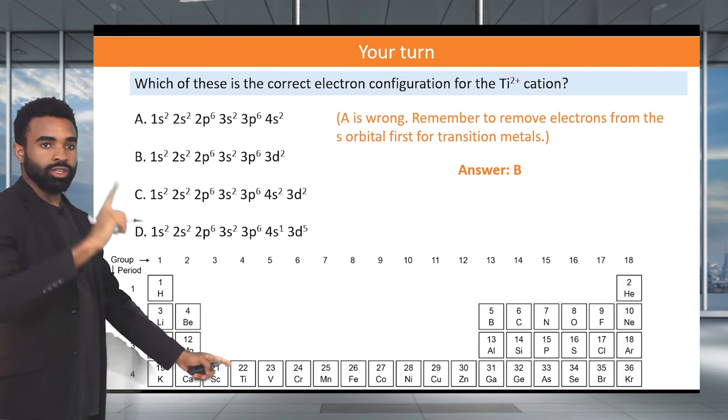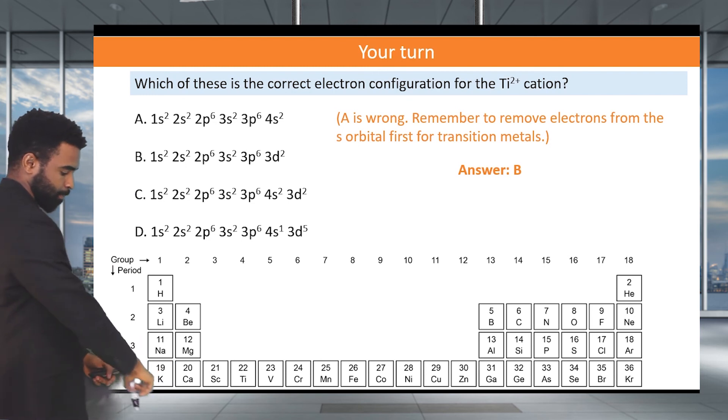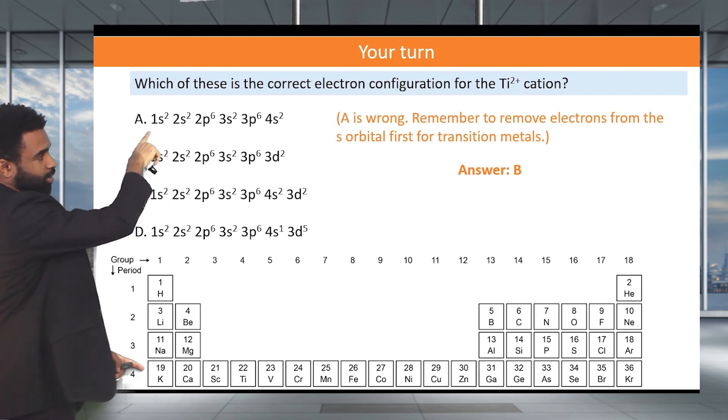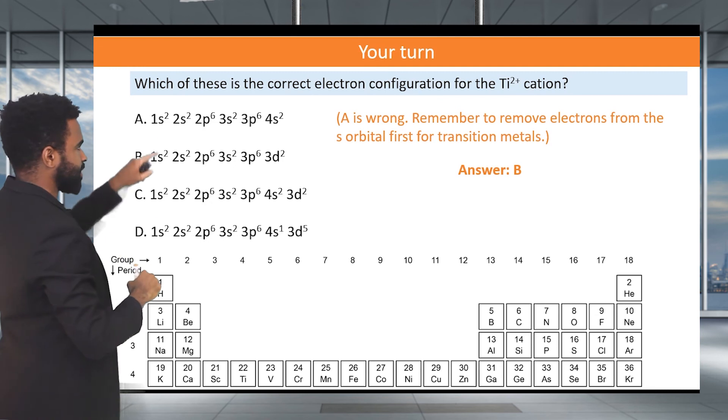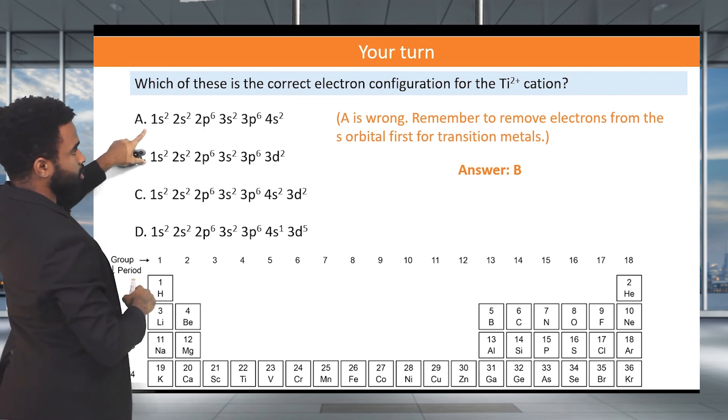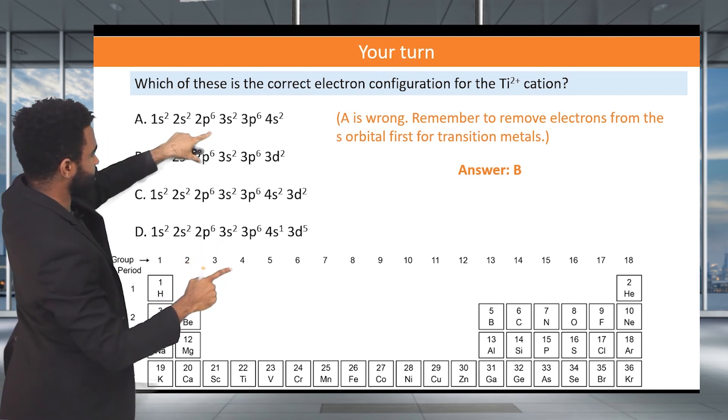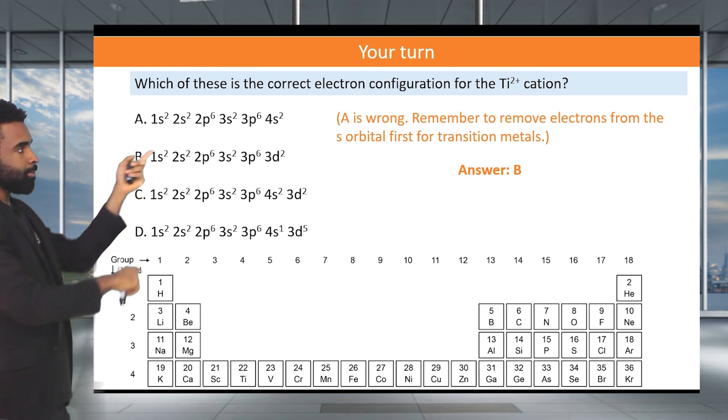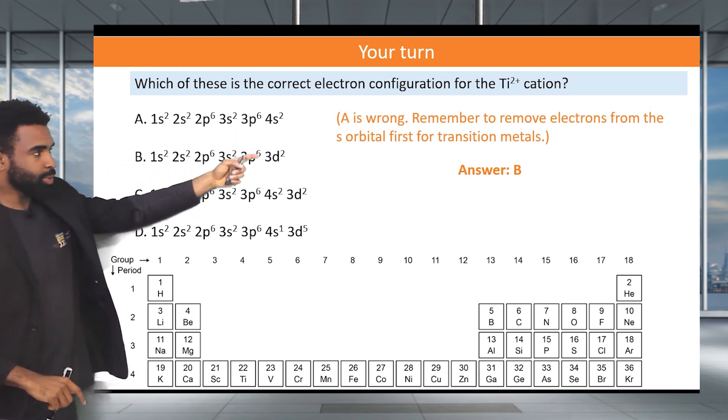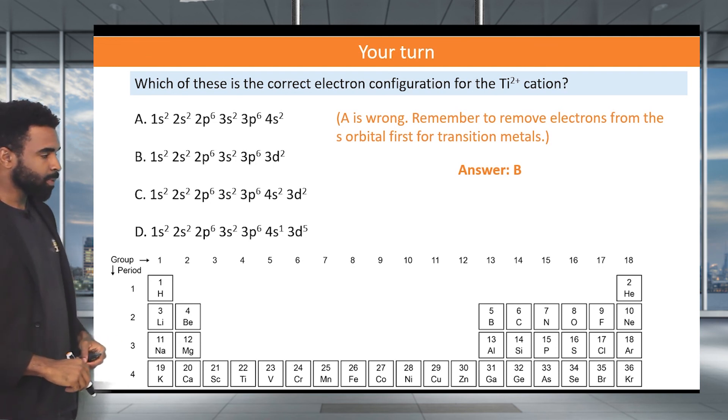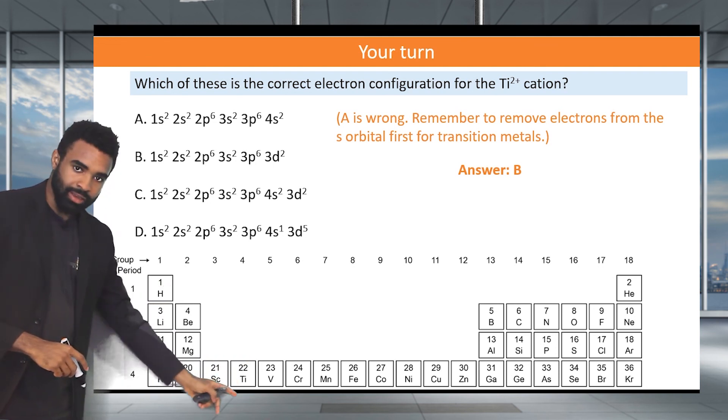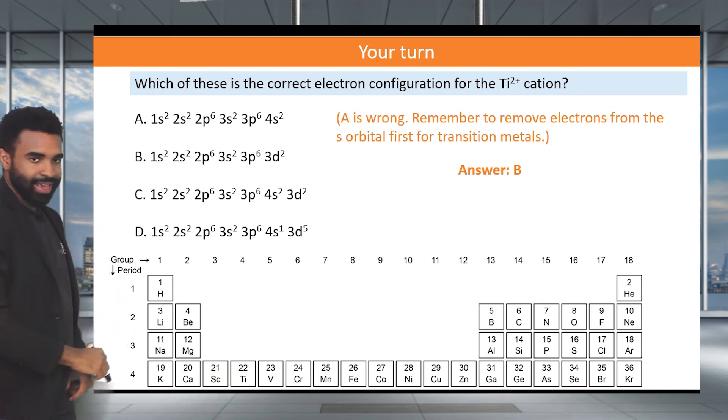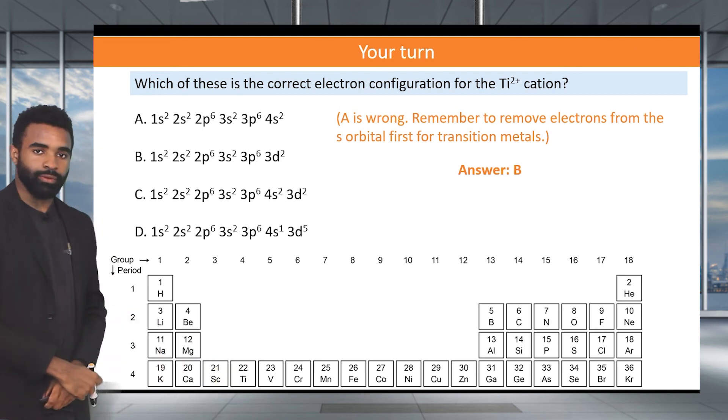So remember now that since we are working with titanium, which is a transition metal, you need to lose the 4s electrons first. This one does not respect that. Or actually this one. What's the problem with this one? Let's see. A is wrong. Remember to remove the electrons from the s orbital first for the transition metals. Do I have a duplicate? I see. Yes, yes. So the answer is indeed B, because that one we lost the d electrons, whereas here we should lose the s electrons. Hopefully that makes sense to you. So we start from the configuration for titanium, and then we lose the s's because that is the rule for transition metal ions.